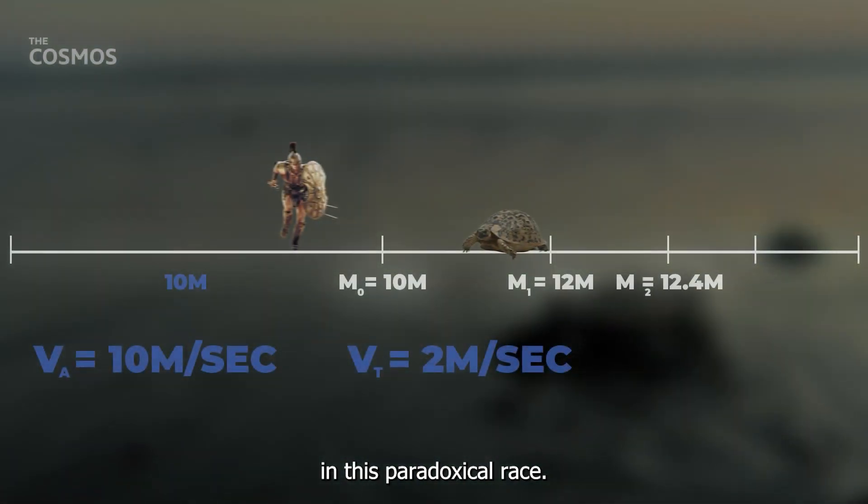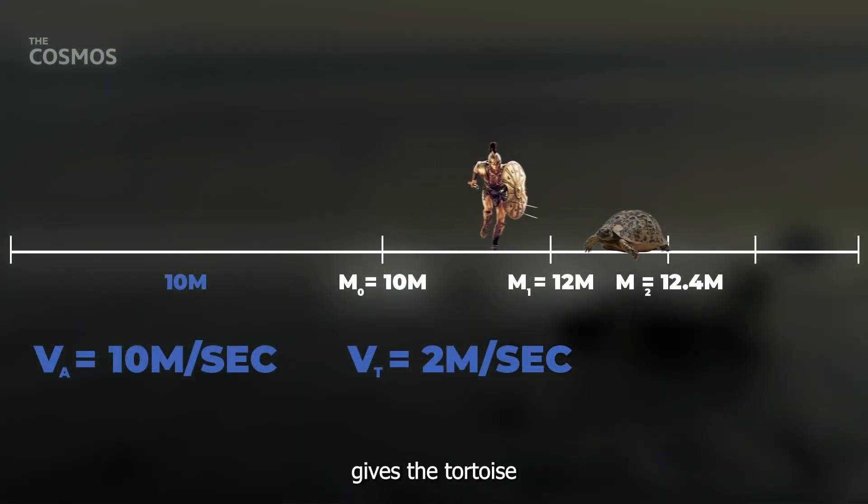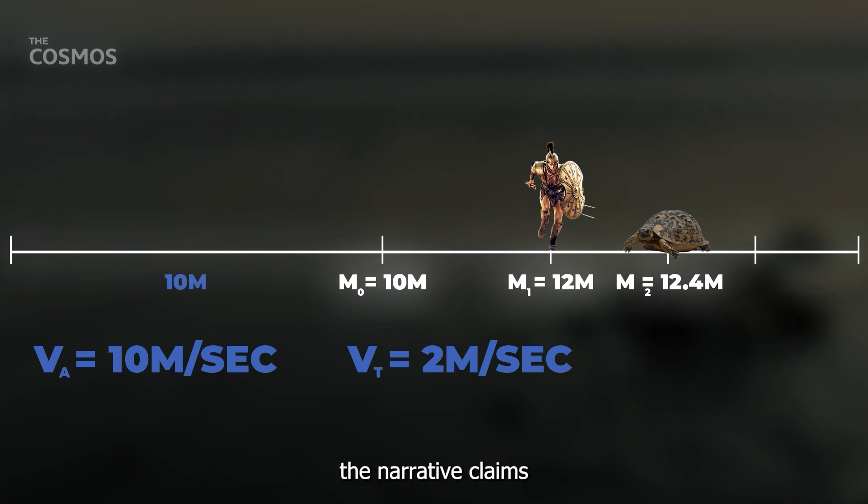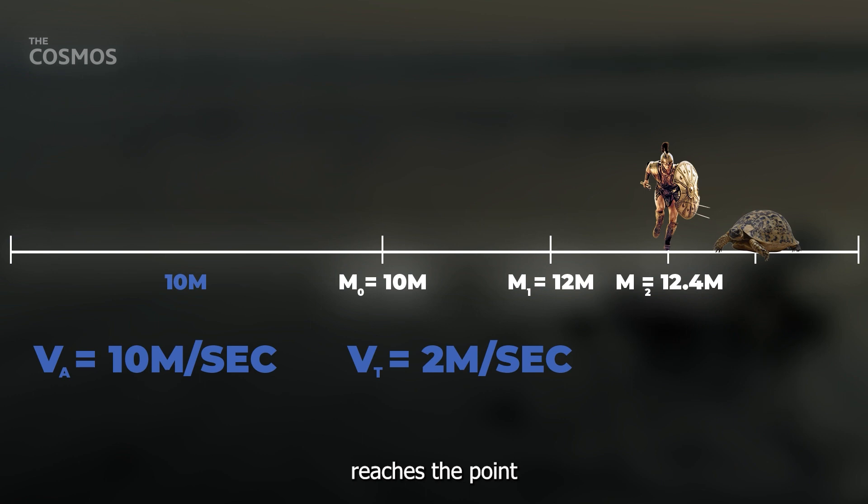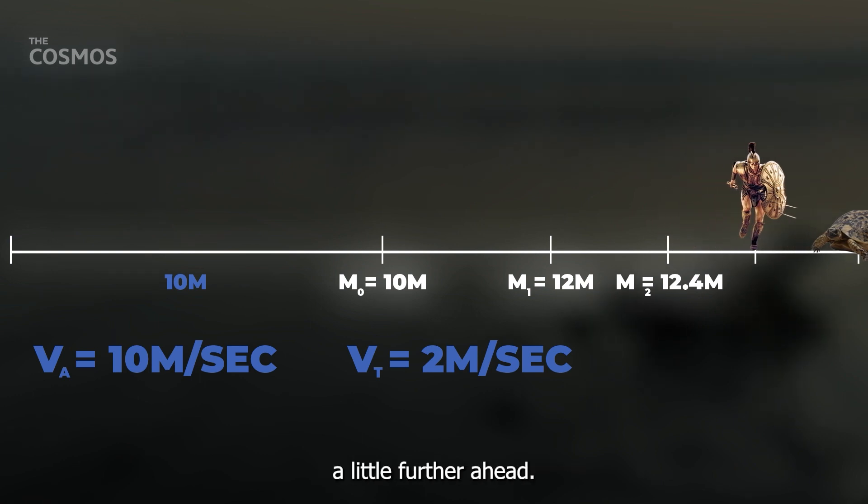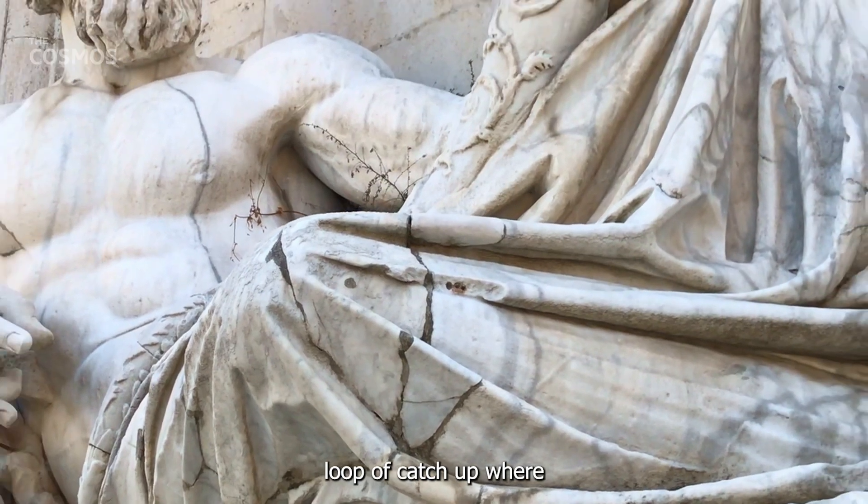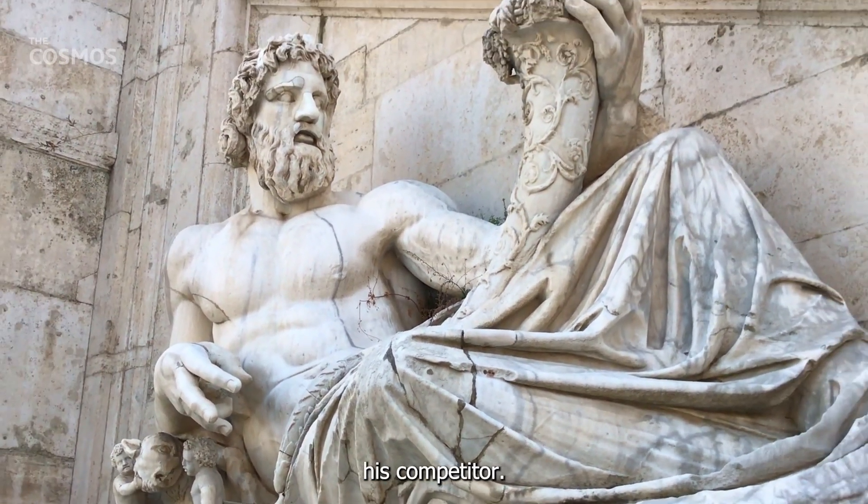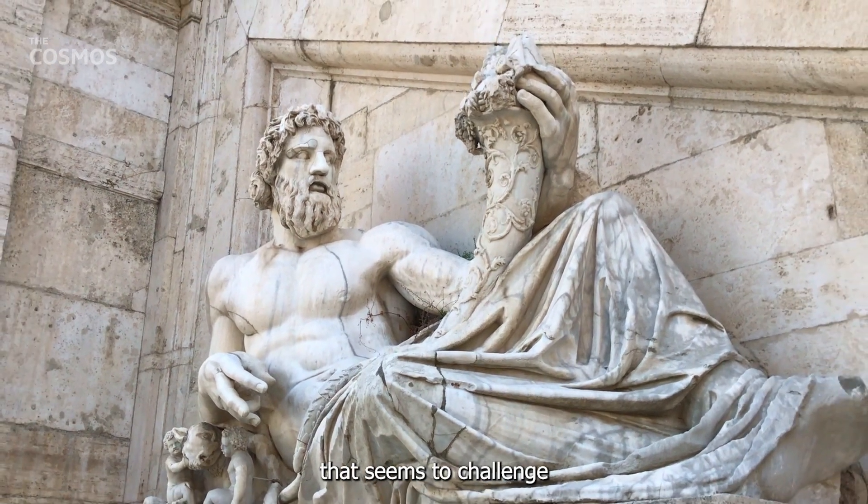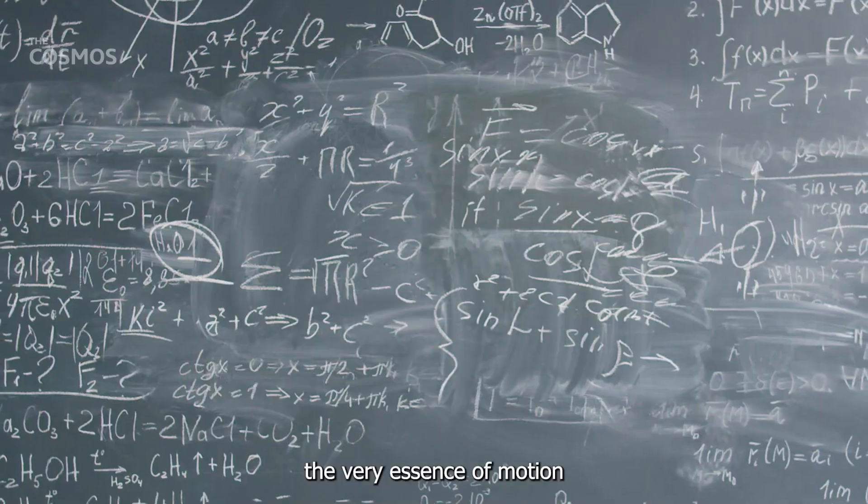In this paradoxical race, even if Achilles gives the tortoise a head start, the narrative claims he will never overtake it. Each time Achilles reaches the point where the tortoise once was, the creature has moved a little further ahead. This creates an infinite loop of catch-up, where the hero is always approaching but never surpassing his competitor. It's a beguiling notion that seems to challenge the very essence of motion and progress.